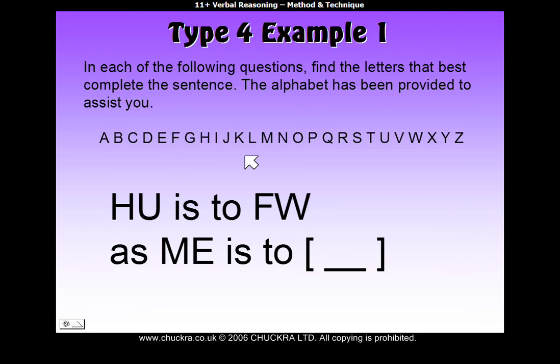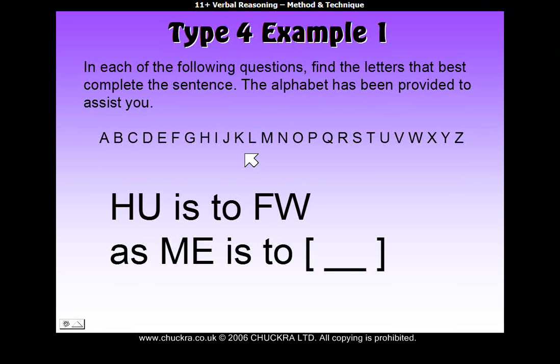So here is the question. It says HU is to FW as ME is to something, and you've got to find out what ME is to.